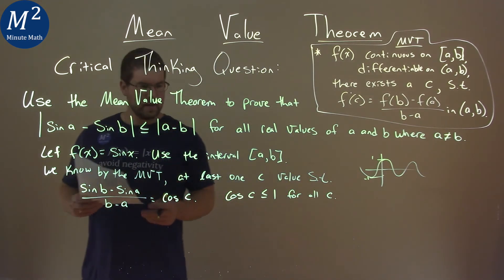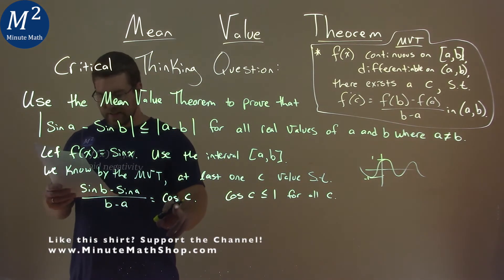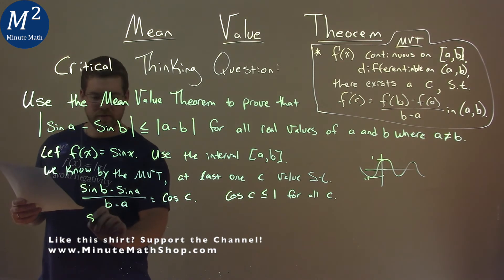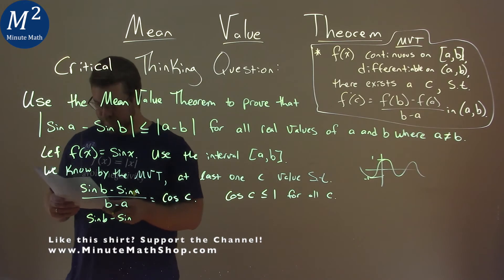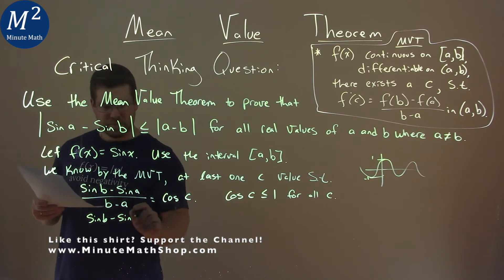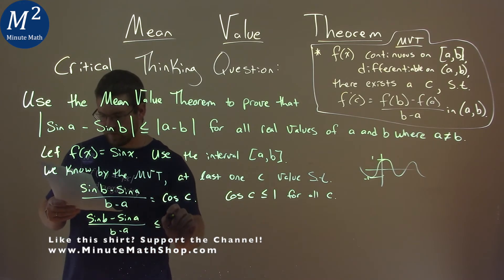So what do we know here then? We know that cosine of C can be replaced by sin B - sin A over B - A, which is less than or equal to 1.